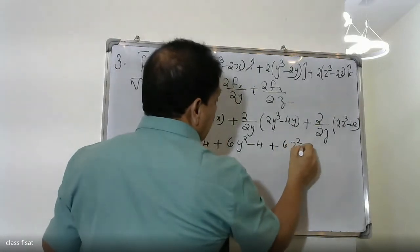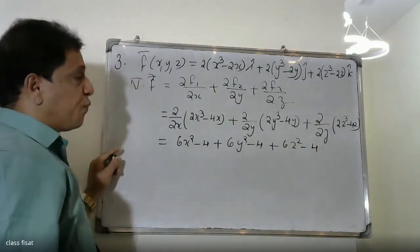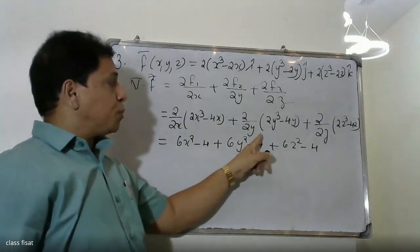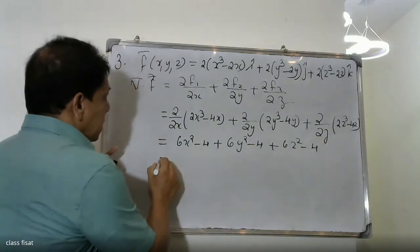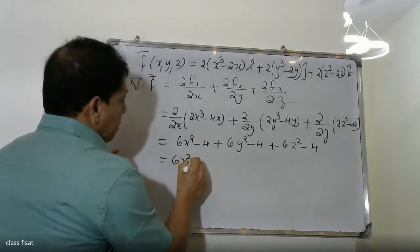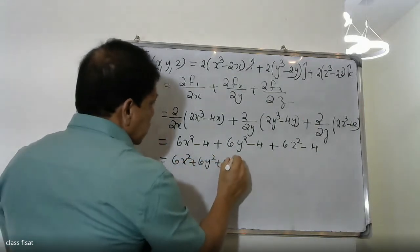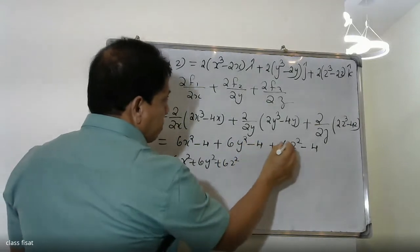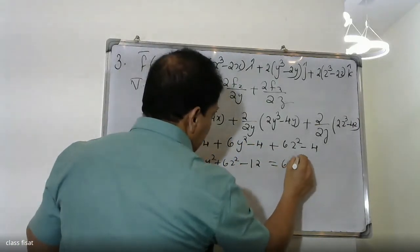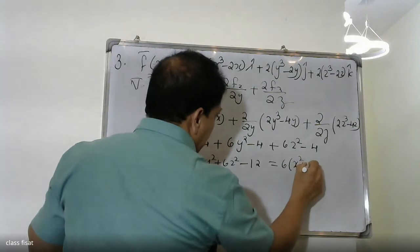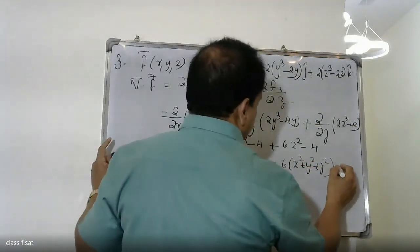Partially differentiating with respect to x, y, and z, we get 6x² - 4 + 6y² - 4 + 6z² - 4, which equals 6(x² + y² + z²) - 12.